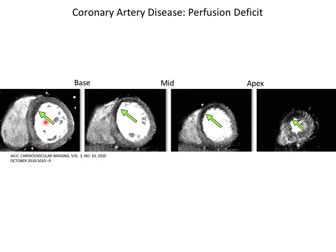A perfusion deficit can also be seen on CT scans. These are a set of CT scans at different positions in the heart from the base down toward the apex. You can see that the contrast agent has gone into most of the myocardium in the short axis image, but there is a segment where contrast does not seem to have flowed in — that's a perfusion deficit. With a single time frame at the right time after injection, you can already see a perfusion deficit.